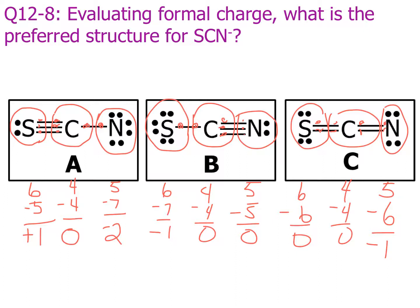Alright. Well, in looking at this, I hope you realize that A is a terrible structure. Atoms are most comfortable when they have formal charges of zero, which is what their typical valence electrons are. And a compound is most comfortable at zero, zero, zero.